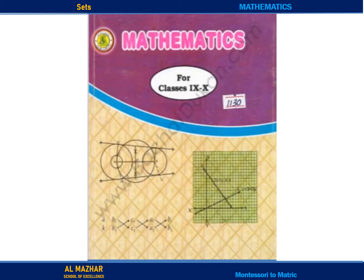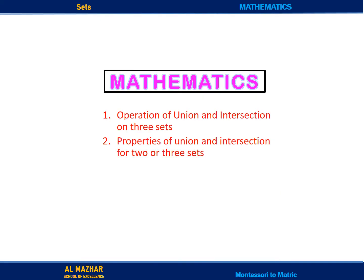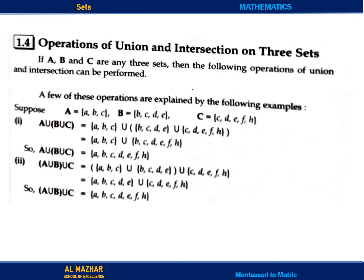Assalamualaikum, how are you students? I hope you all are fine. Open your book Mathematics, it is unit number one. We will cover two topics: operation of union and intersection on three sets, and properties of union and intersection for two or three sets. So the first topic is operation of union and intersection on three sets.